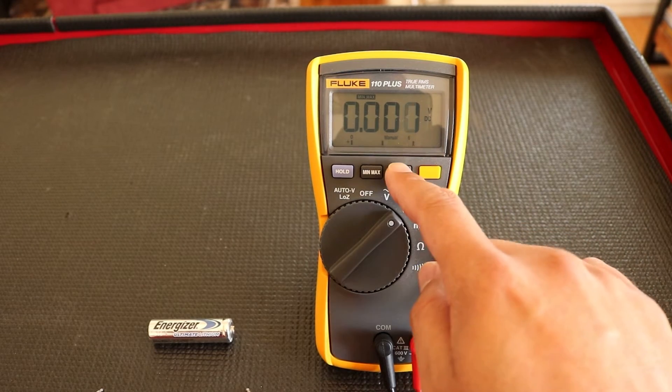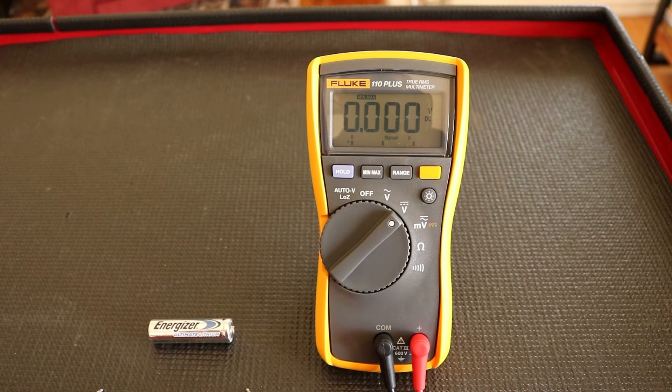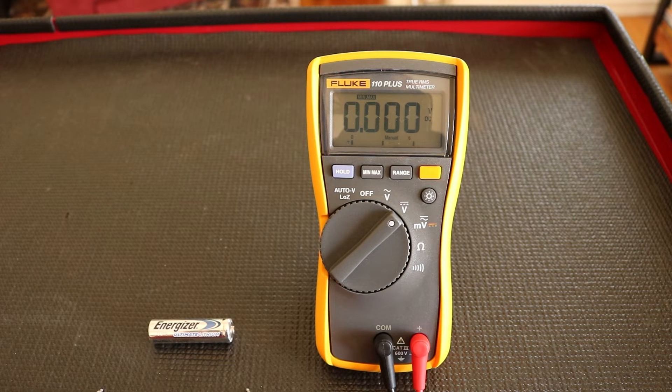Our next button is the range button. The range button allows for the manual and auto range to be selected. In auto range mode, the meter selects the range with best resolution. In manual range mode, you override auto range and select the range yourself.